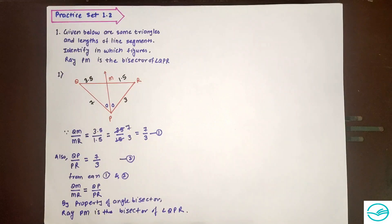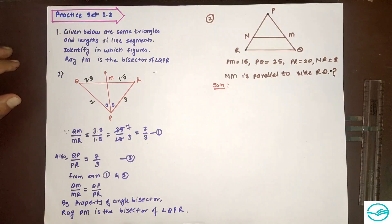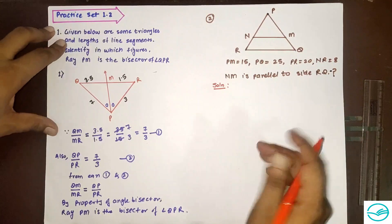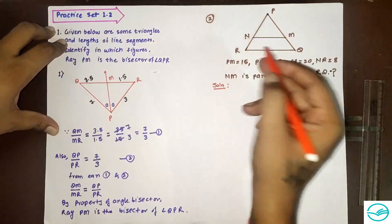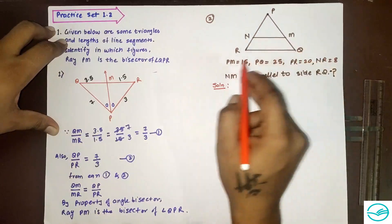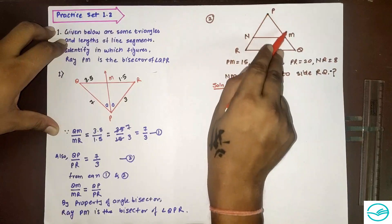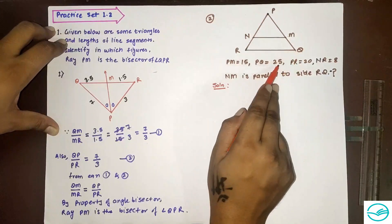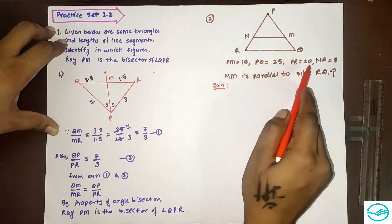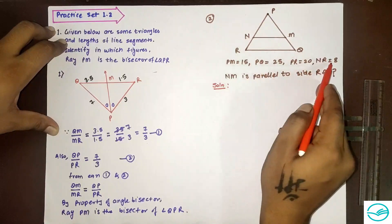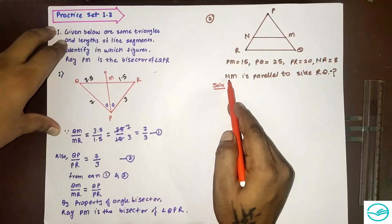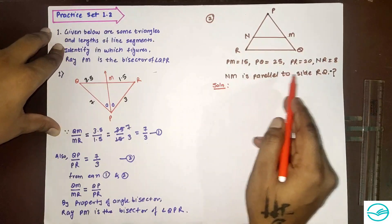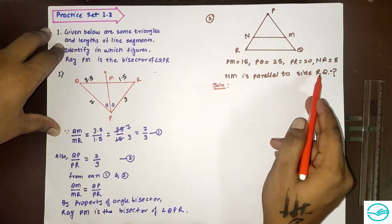Now let's move to question number 2. In the given figure, PM is 15, PQ is 25, PR is 20, and NR is 8. Then state whether line NM is parallel to side RQ and give your reason.